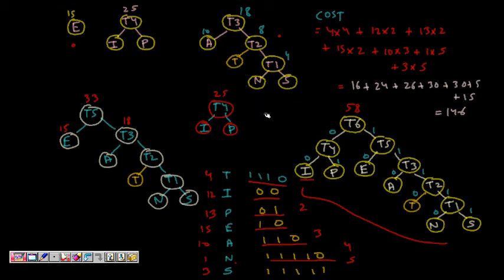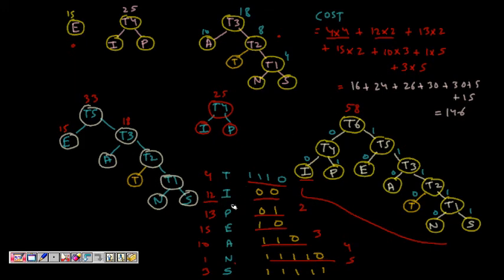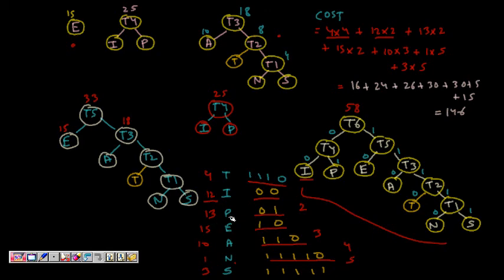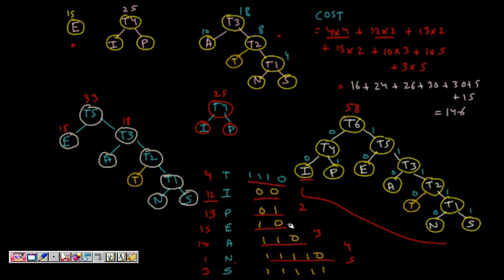So this is why we have a greedy algorithm for Huffman coding and it gives us very good compression ratio. So here if we see, it is occurring four times, so four into two length, these many bits are required for I. P is occurring 12 times into 2. P is occurring 13 times into two. E is occurring 15 times into two. A is occurring 10 times into three.